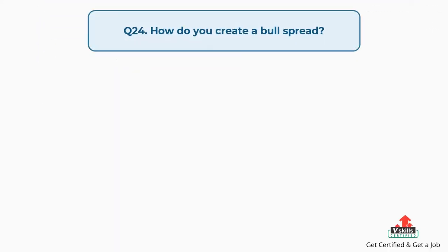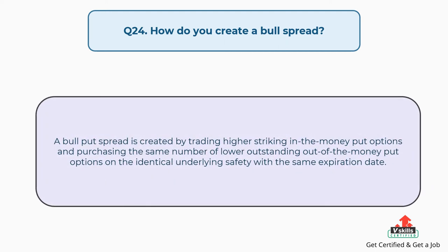Question number twenty-four: how do you create a bull spread? A bull put spread is created by trading higher striking in-the-money put options and purchasing the same number of lower outstanding out-of-the-money put options on the identical underlying security with the same expiration date.